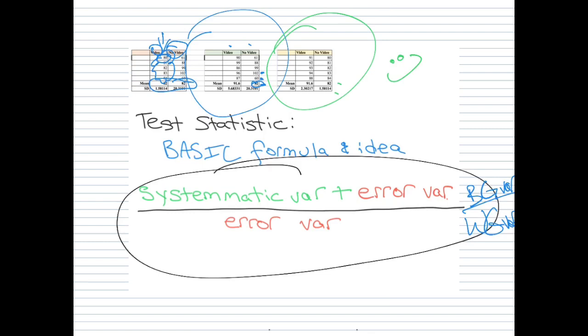So systematic variance plus error variance, our numerator, is our between groups variance, which is basically the difference between means. And the variation within each group from one participant to the next is our within groups variation or our error variance.